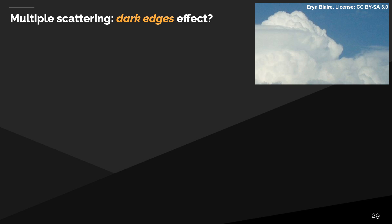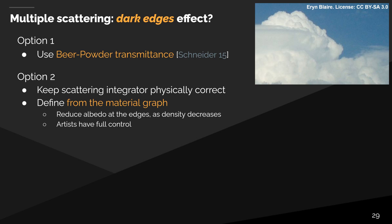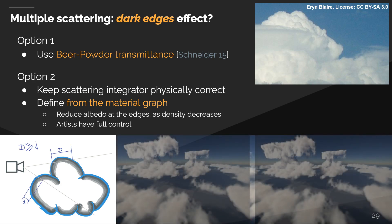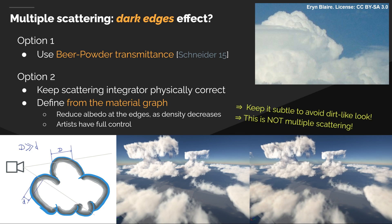Multiple scattering in a high-albedo situation is challenging even for offline rendering, so we have to cheat a bit. One option is to use the custom transmittance function presented by Schneider, but we prefer to stay physically based and let artists control such effects from the material graph. We basically recommend simply lowering the albedo near the edge of the cloud — rays will travel more in low-albedo regions at the edges of the volume, automatically revealing details at edges. You can see the subtle effect it brings, producing dark edges similar to the reference. However, this is like ambient occlusion — it is wrong, but it works and helps visually. Be careful not to overdo it in order to avoid a dirty cotton-like smoke look of clouds.